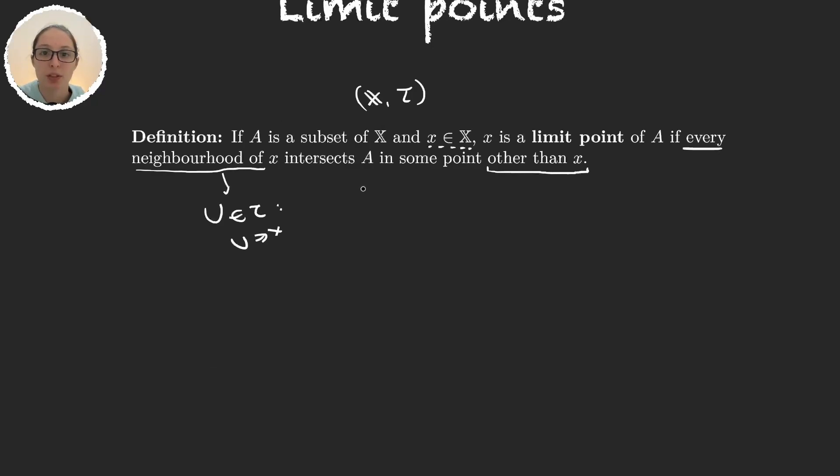Let's write this definition now with symbols. We say that x belongs to A' (and we usually call A prime the set of limit points) if and only if, because it's the definition, every neighborhood of x, so that is every set in the topology that contains x, the intersection of U with A is different from the empty set. So we can write this as saying the intersection of U with A minus {x} is different from the empty set.